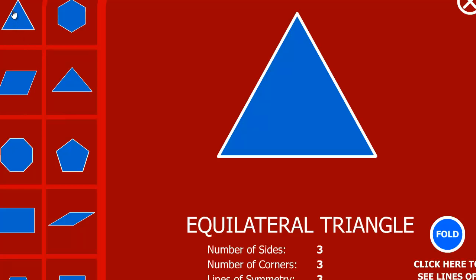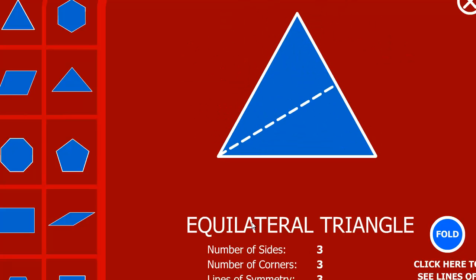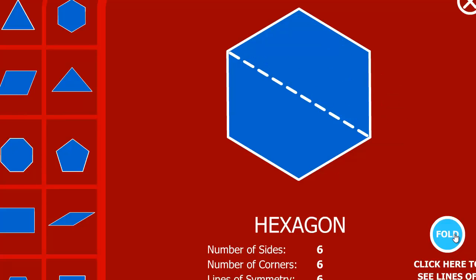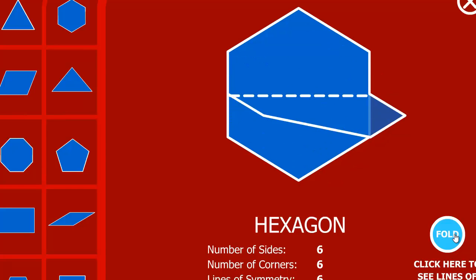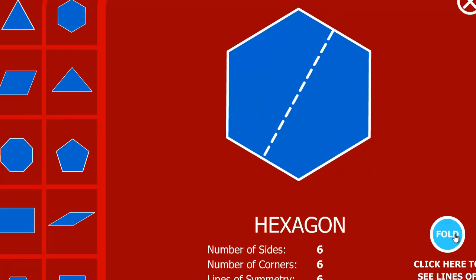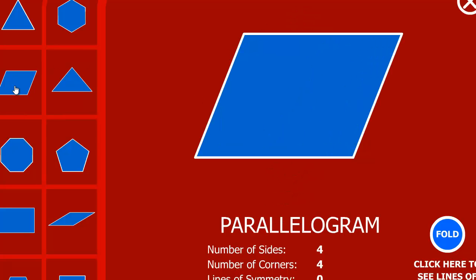Now let's see some shape facts. We have a triangle — how many ways can we fold it? One, two, three. If it's an equilateral triangle, then hexagon — how many ways can we fold it? One, two, three, four, five, six. This is a pretty cool gadget.